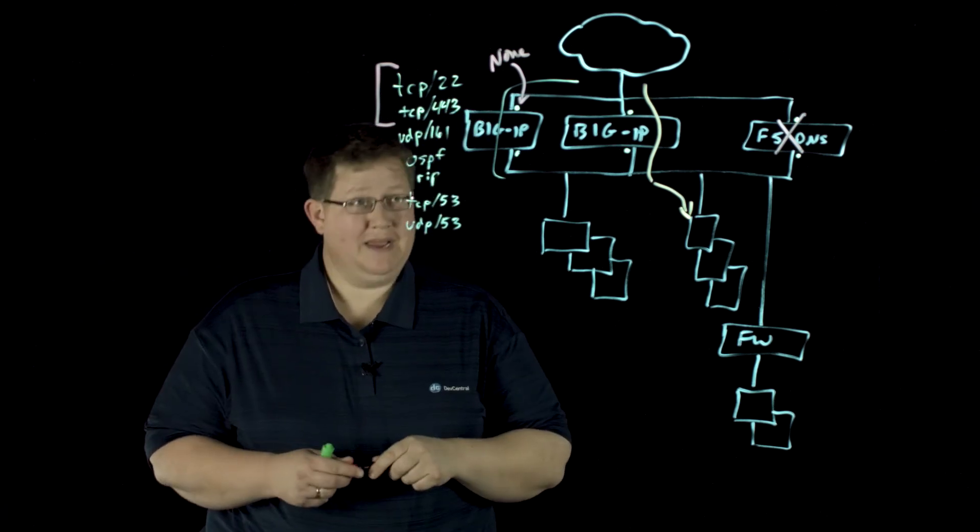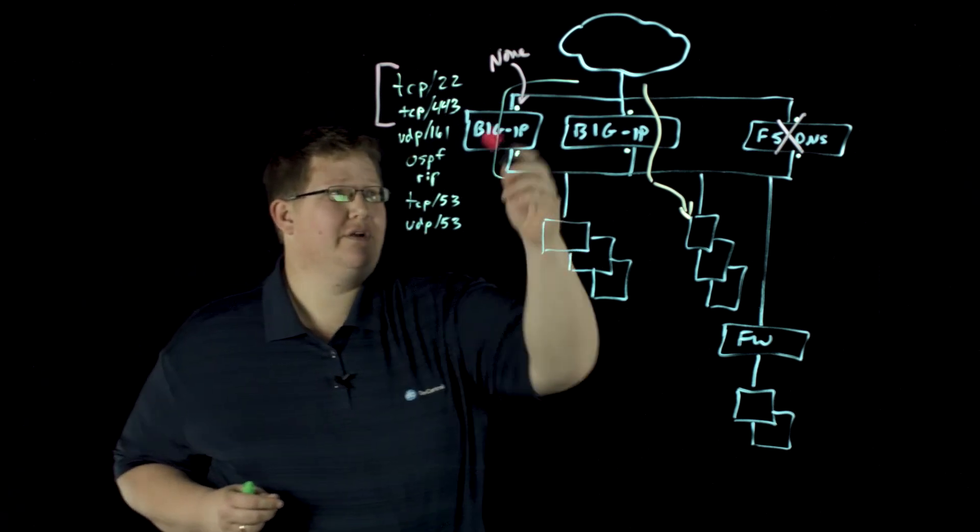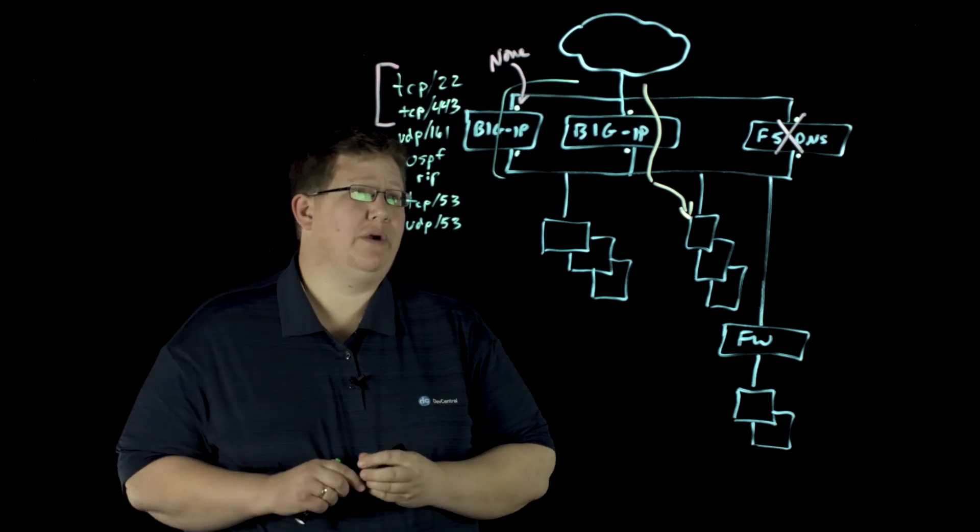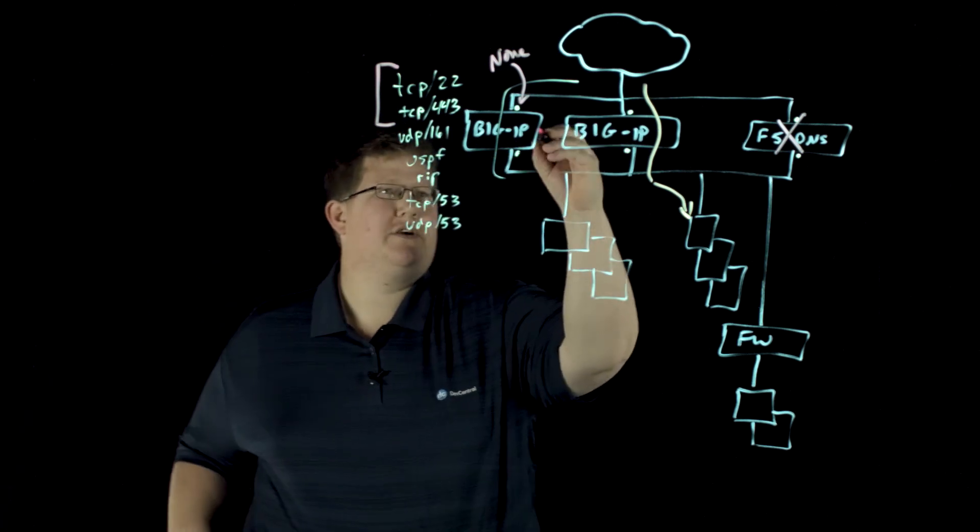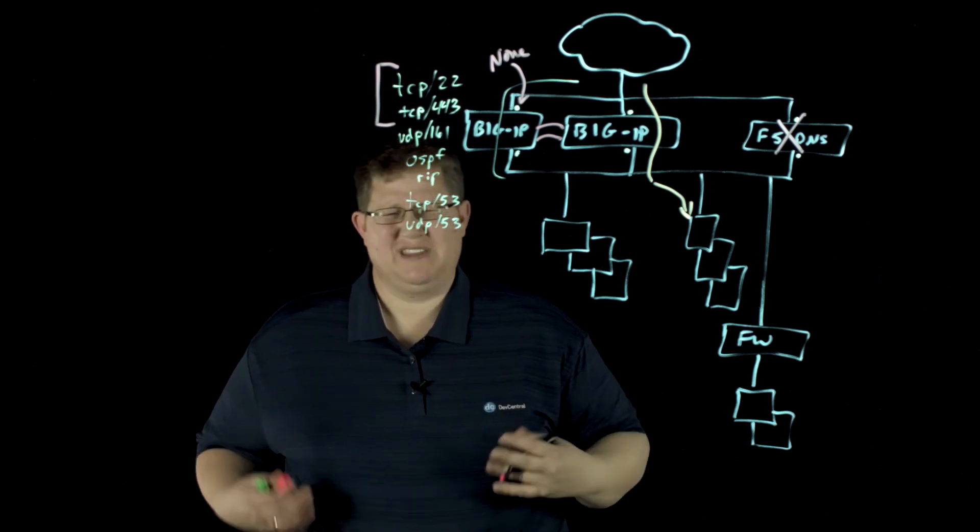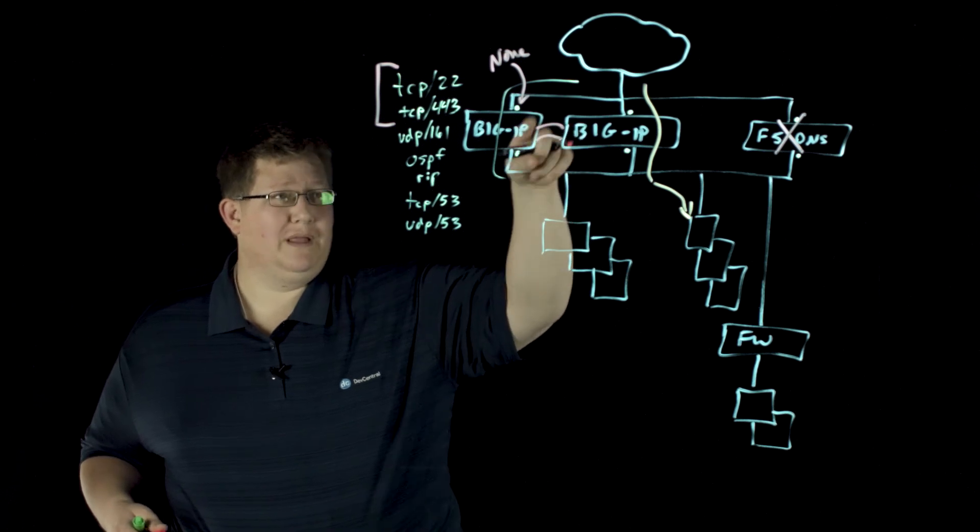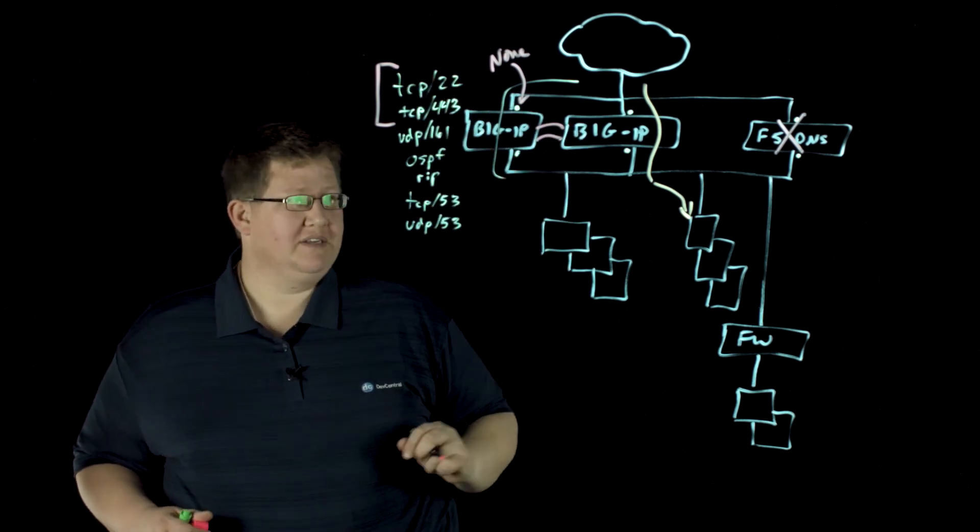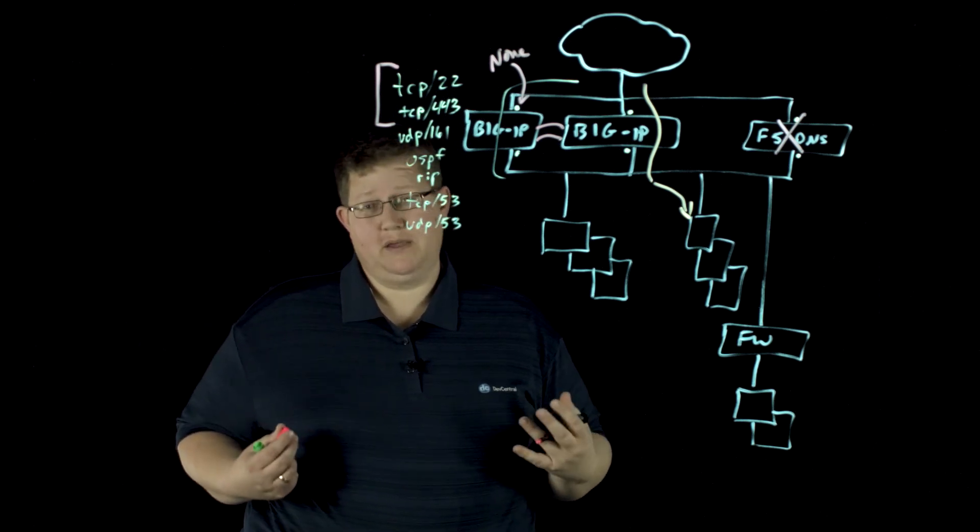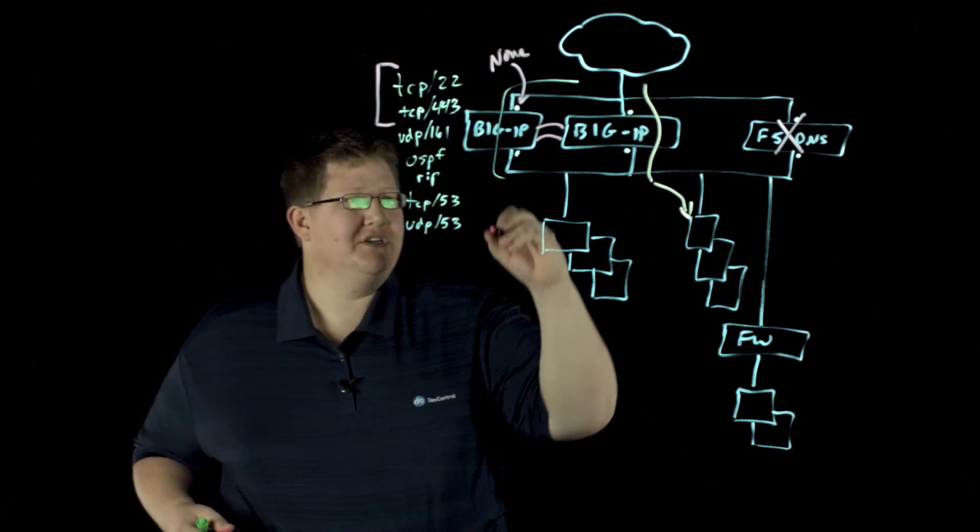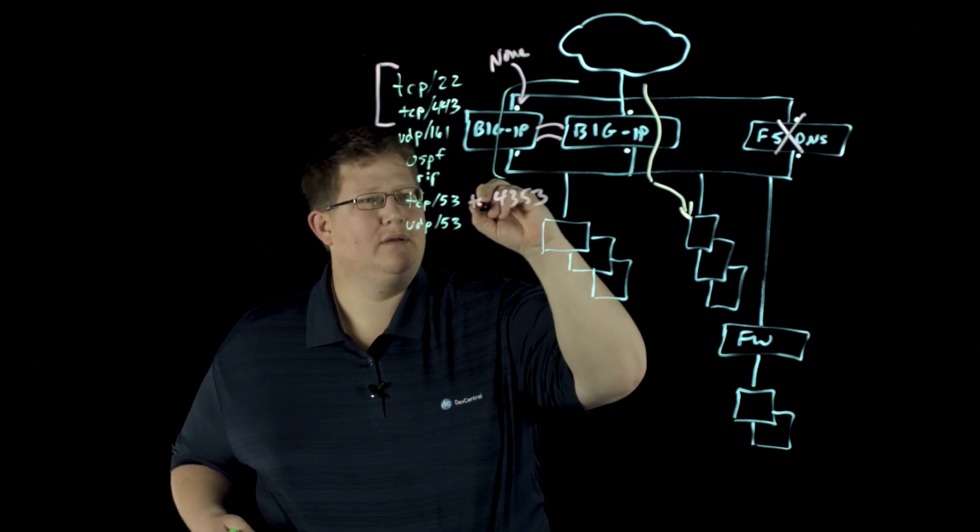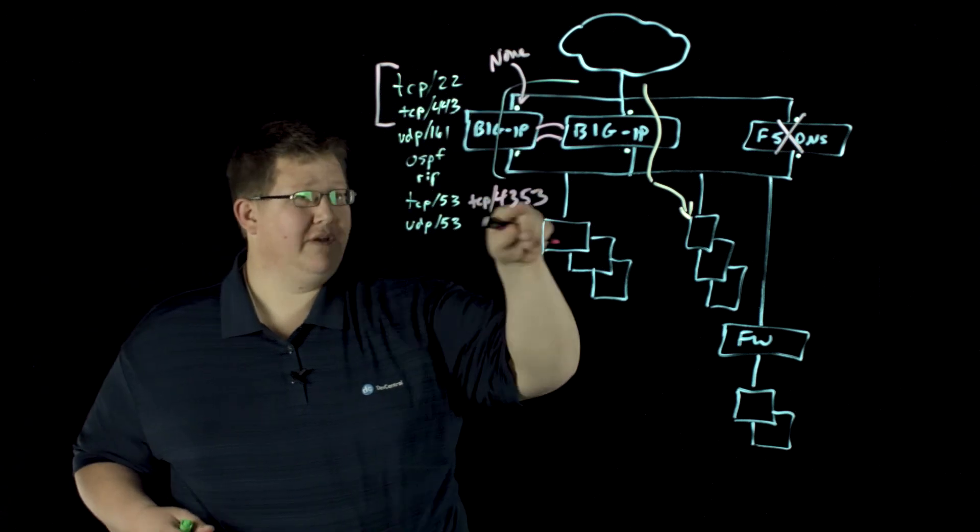There are some exceptions. ICMP, regardless of what your settings are, will be allowed. And also the TCP mirroring port. So if this is a cluster here and you have HA configured there, the mirroring ports, which I think start at 1029 on TCP, those will be allowed regardless of what your list says to the self IPs. And then the other one is the sync group protocol, which is TCP 4353. And that's, regardless of what you configure, that one will be allowed through.